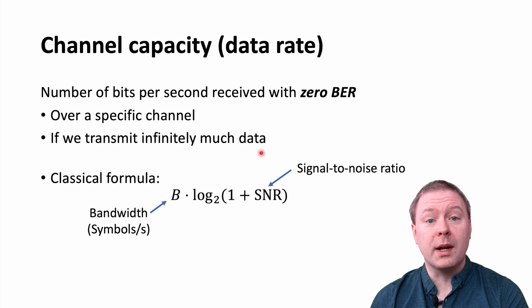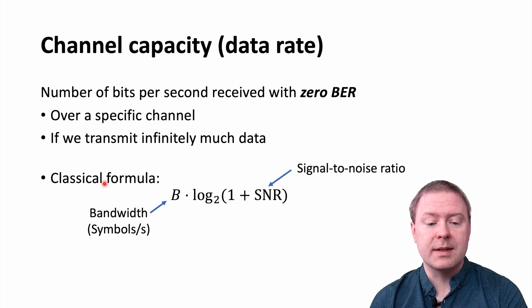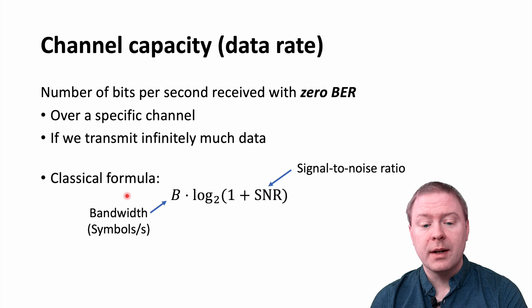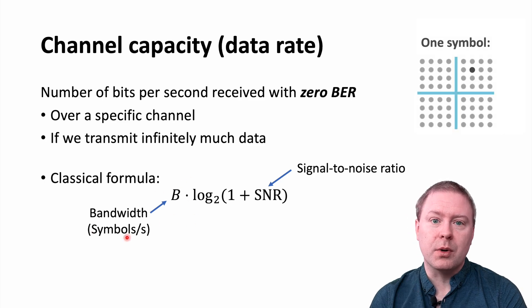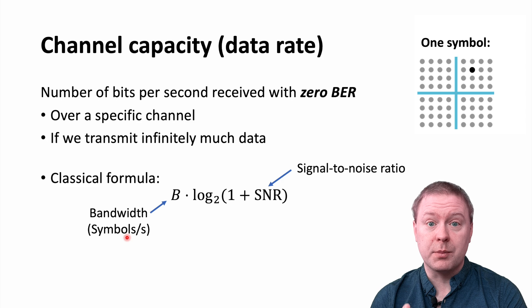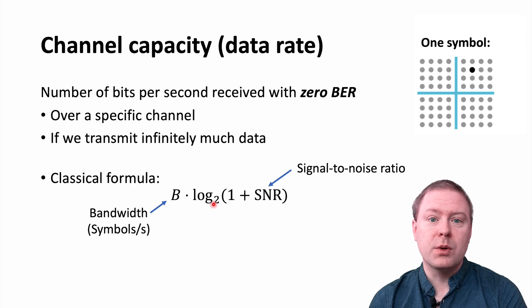There is a classical formula for the channel capacity that Claude Shannon was deriving in his seminal work in information theory. And it is to take the bandwidth, which represents the number of symbols that we can transmit over a channel per second, and then the log₂ of 1 plus the signal to noise ratio. So this is a way of computing how many bits that we can transmit per symbol using our modulation without any errors.